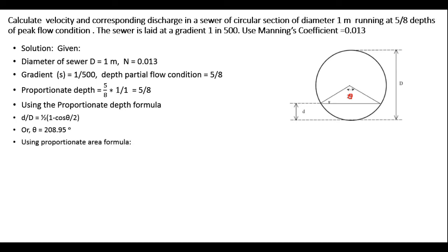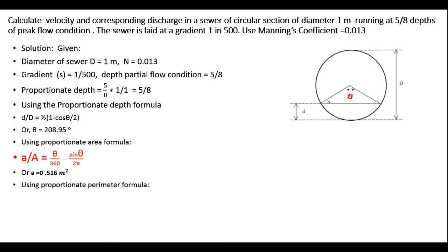Now we apply the proportionate area formula: a/A = θ/360 − sin(θ)/(2π). The full flow area A is already known, and theta is 208.95 degrees. Substituting these values, the wetted area in the partial flow case is calculated to be 0.516 square meters. Similarly, we write the proportionate wetted perimeter formula as p/P = θ/360.